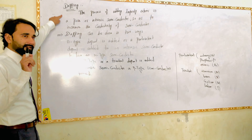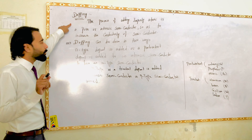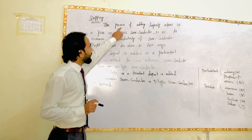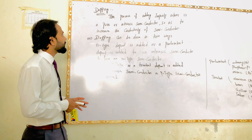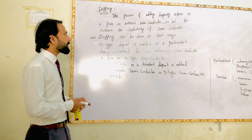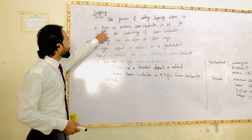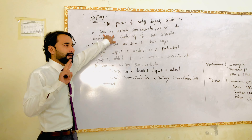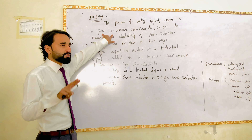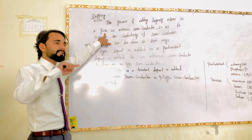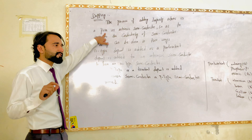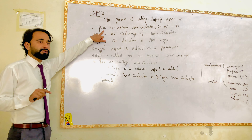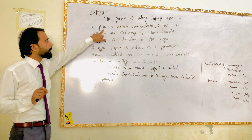The process of adding impurity — the outcomes are pure and intrinsic. Pure and intrinsic are the same. The next two types are intrinsic and extrinsic. Intrinsic is the pure form and extrinsic is the impure form.